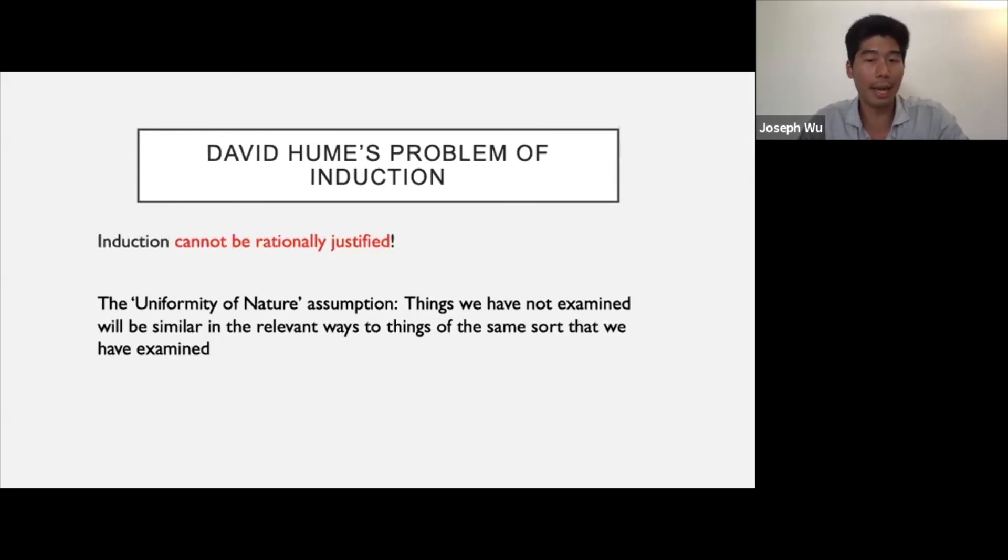Hume's worry concerned how we know that this uniformity of nature assumption is true, because this is the assumption that underwrites all inductive inferences. Now, as an exercise, we might consider trying to find good evidence to justify its truth. We might say, well, this assumption is largely held true up till now, so surely that gives us good grounds for thinking it is true. But this would not actually establish the truth of the uniformity of nature assumption. After all, we can't point out that nature has been uniform in the past to justify that nature is going to be uniform in the future. This is because this is itself an inductive argument that depends on the uniformity of nature assumption. In other words, an argument that assumes the uniformity of nature assumption is true from the outset can't prove that the uniformity of nature assumption is true. This would just be reasoning in a circle.